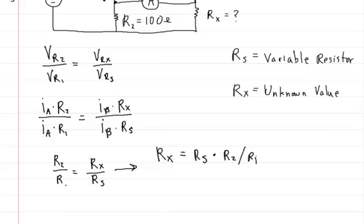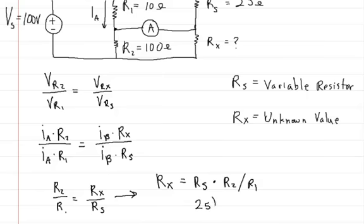And then we'll just pop in these values for it. So RS in this case was 25 ohms. So you're just going to put 25 ohms multiplied by R2. R2 is 100 ohms divided by R1 which is 10 ohms.